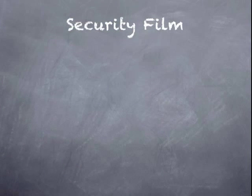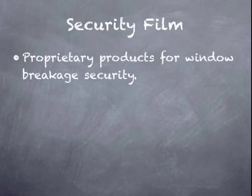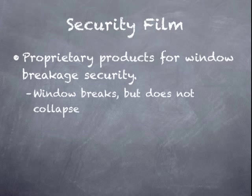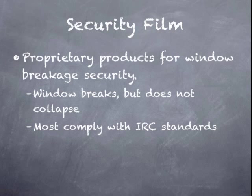Another method of safety glazing is security film. These are proprietary products that are primarily marketed for window security, to stop a window from breaking, to prohibit the snatch and grab where someone breaks in and quickly unlocks your door. In these tests, the window does break and it breaks into large, dangerous pieces, but the film keeps the window together and prohibits it from collapsing and hurting you. These products must comply with those IRC standards previously discussed.